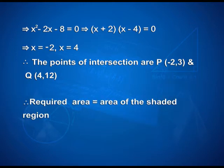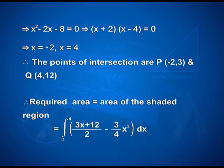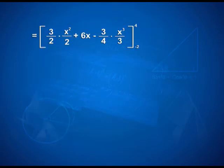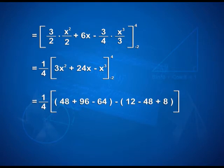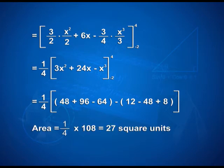Therefore, the required area equals the integral from -2 to 4 of [(3x plus 12)/2 minus (3/4)x squared] dx. That equals (3/2) times [x squared/2 plus 6x] minus (3/4) times [x cubed/3] with limits -2 and 4, which simplifies to (1/4) times [3x squared plus 24x minus x cubed] with limits -2 and 4. On applying the limits, we have (1/4) times (48 plus 96 minus 64 minus 12 minus 48 plus 8), giving the required area as (1/4) times 108, which is 27 square units.